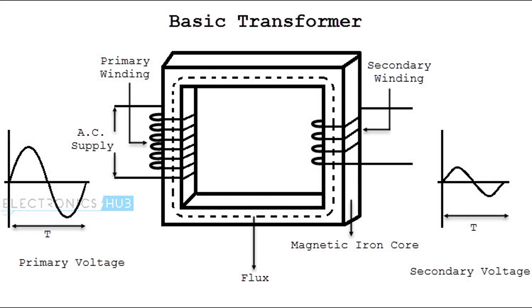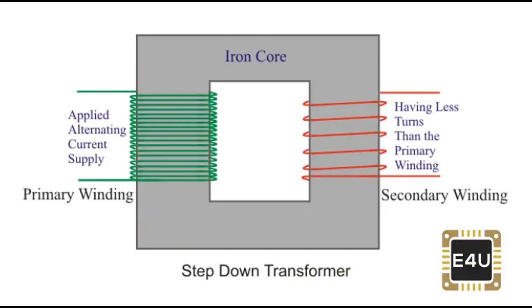Step-down transformers are a type of transformer that decreases the voltage level from the primary side input to the secondary side output. They have a higher number of turns in the primary coil compared to the secondary coil. As a result, the voltage induced in the secondary coil is lower than the voltage applied to the primary coil.